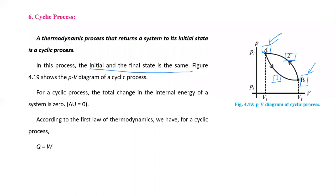In a cyclic process, the total change in internal energy is zero. If the total change in internal energy is zero, then by the first law of thermodynamics we can write Q equals W — heat supplied is used to do work.